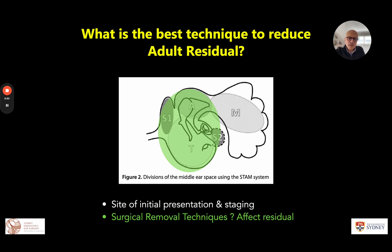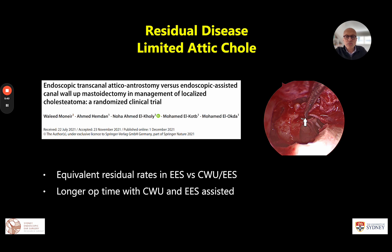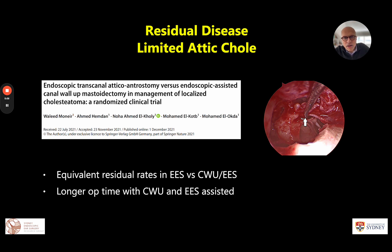Focusing on single-stage or two-stage disease in the mesotympanum and attic, and looking for removal techniques that might reduce residual rates, we have four randomized controlled trials that have come out in the last three years. Two of the studies were relatively limited in numbers and power, and all of them had the weakness of only one year or just above one year of follow-up.